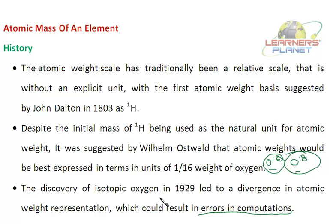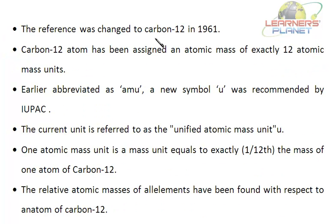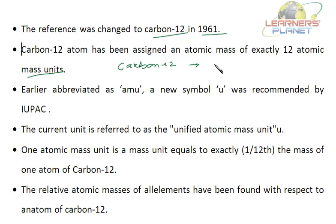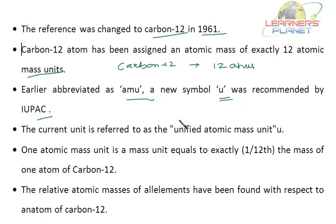So the reference was changed to the carbon-12 atom in 1961. Carbon-12 has been assigned an atomic mass of exactly 12 atomic mass units. The unit was earlier abbreviated as amu, but a new symbol U — standing for unified atomic mass unit — was recommended by IUPAC.